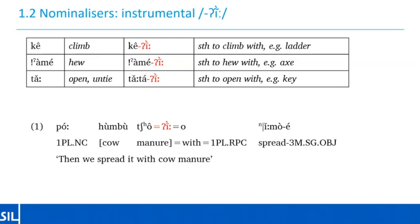A morpheme which has the same form as the instrumental nominalizer, and clearly a related function, is the post-positional clitic 'ing'. This clitic has an instrumental or accompanative meaning, glossed here as 'with'. So 'bo humbo humbo cho ingo imo' — then we spread it with cow manure. You can see this morpheme works at the phrase level; it attaches to the noun phrase 'humbo cho' meaning cow manure. I don't have any data where in its deverbal nominalizing function the 'ing' attaches to a phrase such as a verb with an object — the only examples are just attaching to the verb.